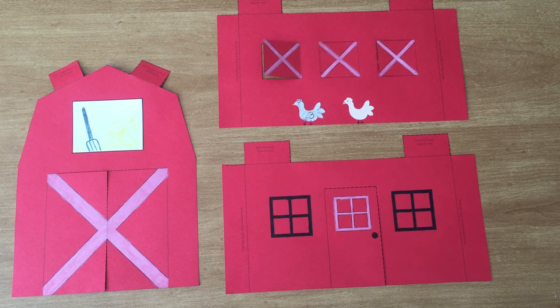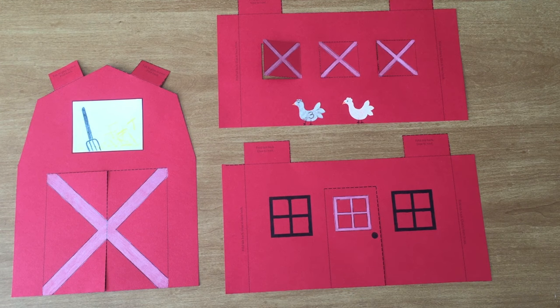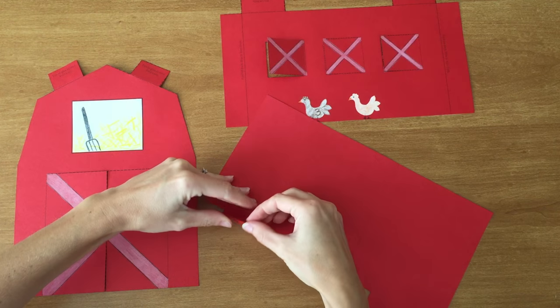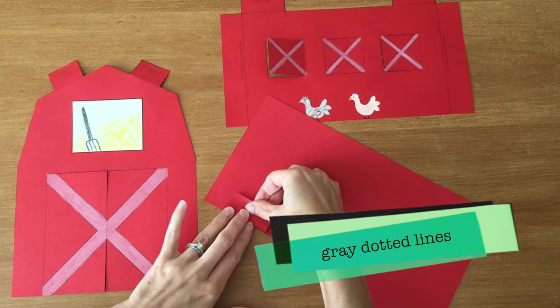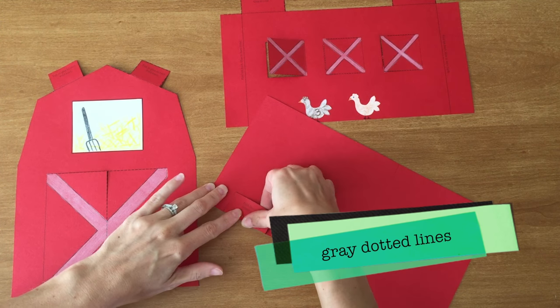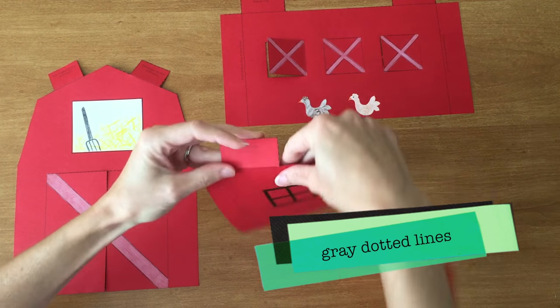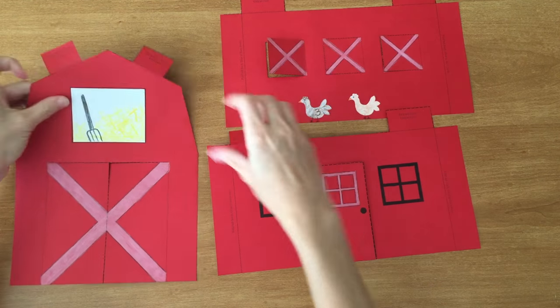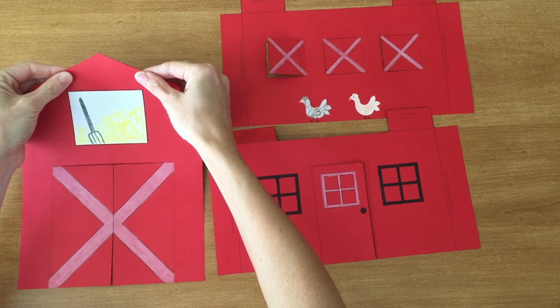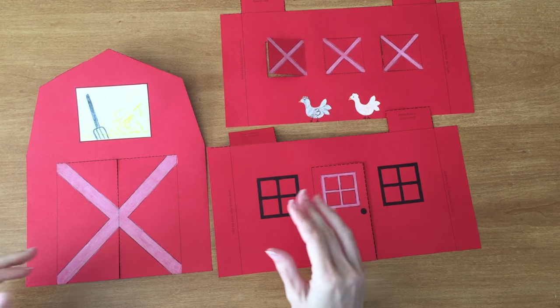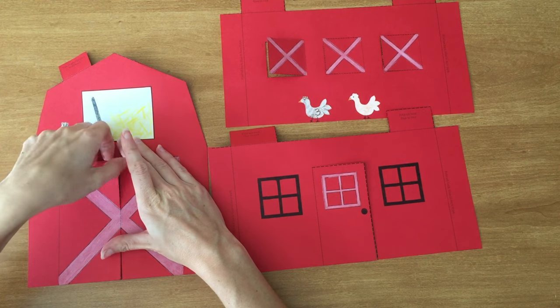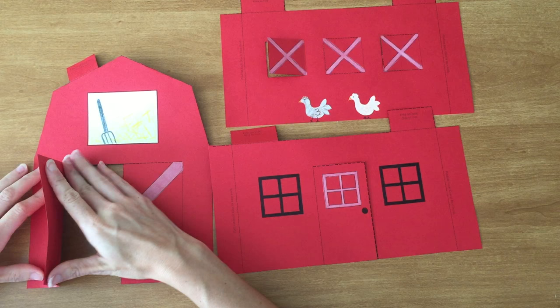When you're ready to fold, start by folding all of the tabs on the barn backwards. And you're just folding on that dotted gray line like so. Fold these, fold your side tabs backwards, fold these tabs backwards. And then when your tabs are all folded backwards go ahead and move to your doors and your shutters. And those you're going to fold open.